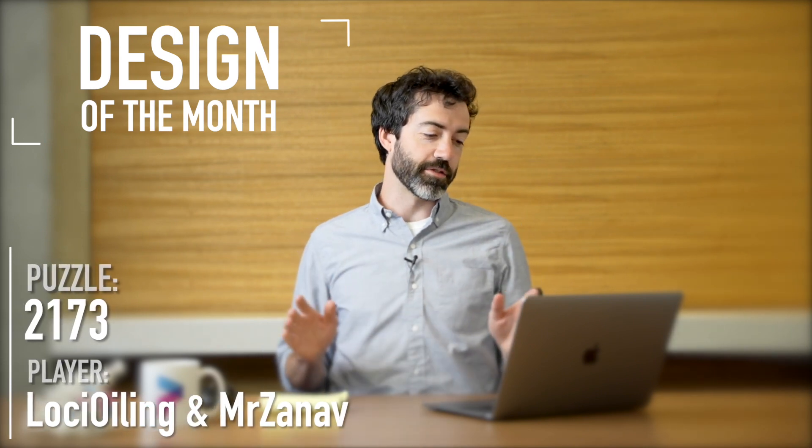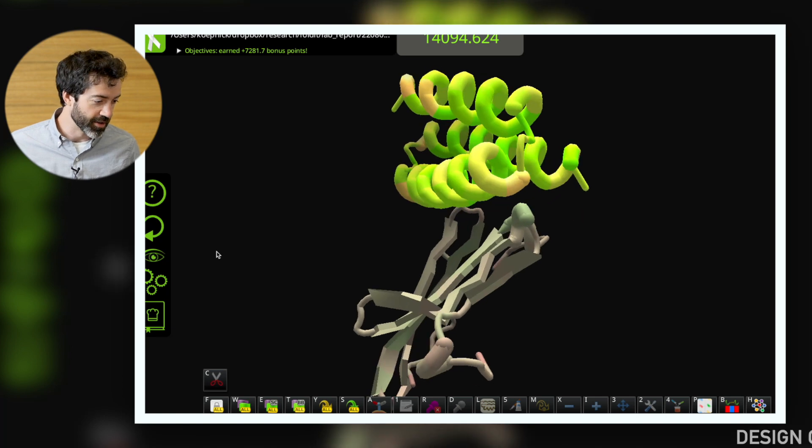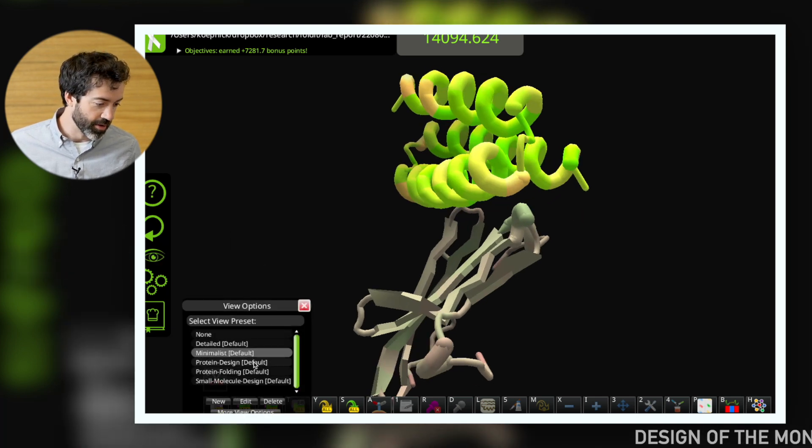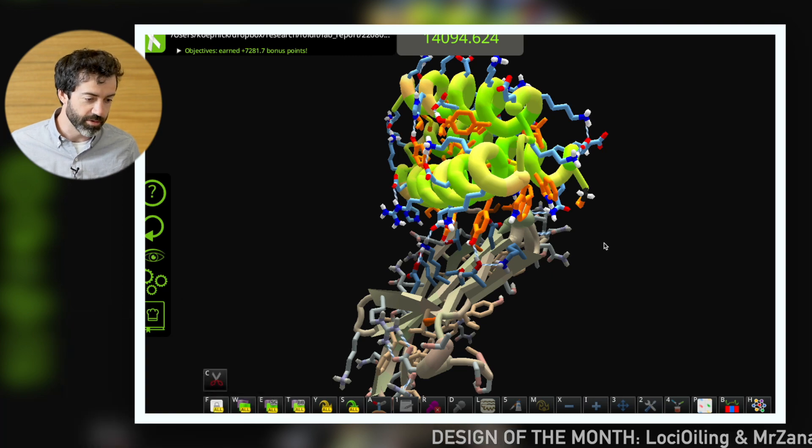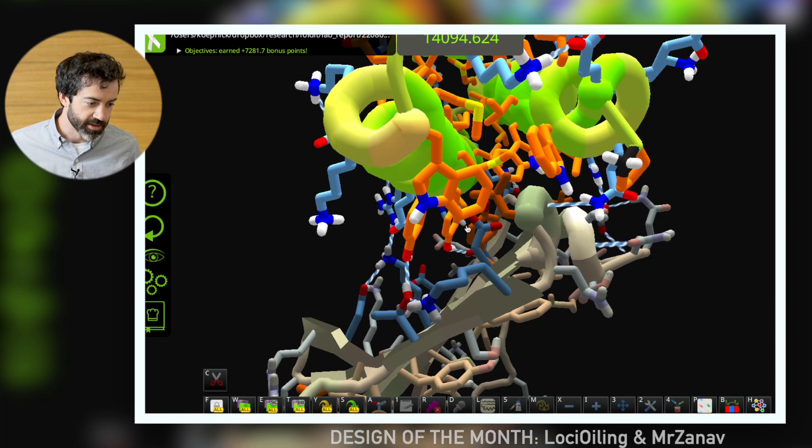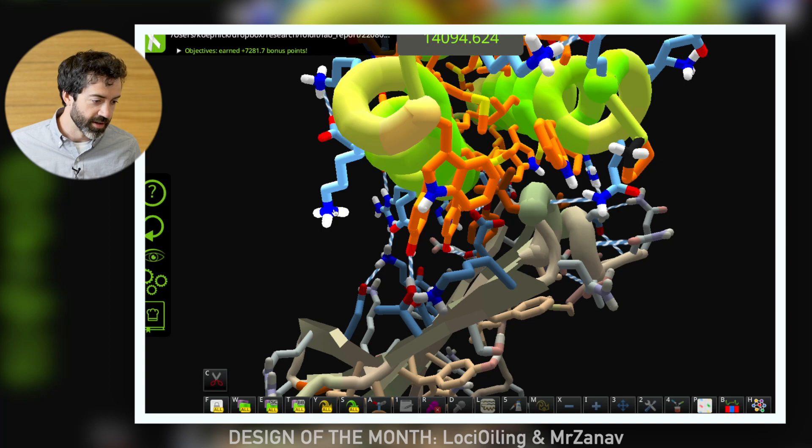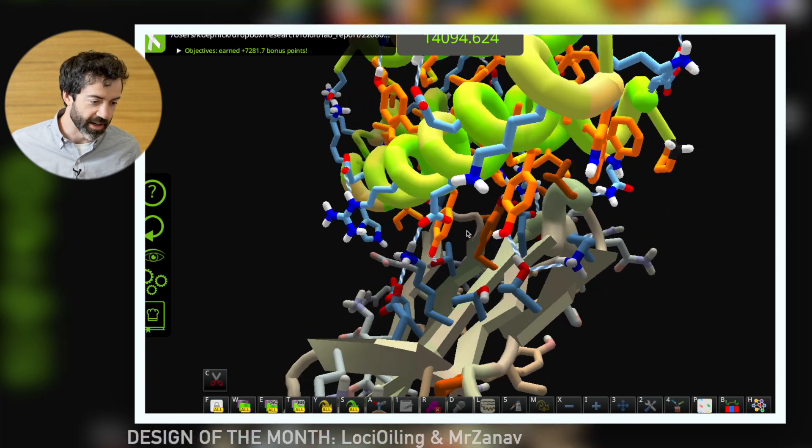This month we have a design from puzzle 2172. This is a CD47 binder design from Loci Oiling and Mr. Zanav. So here, I like to view all of these designs with the protein design view preset, so I can see all of the polar nitrogens and oxygens that need to make hydrogen bonds.